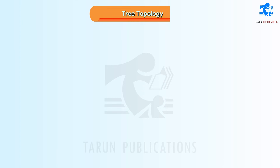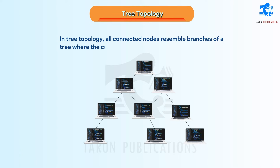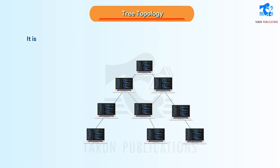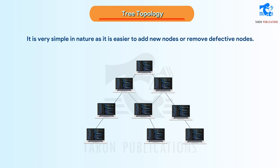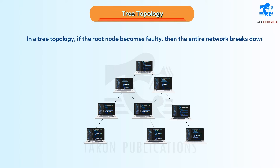In Tree Topology, all connected nodes resemble branches of a tree where the central node acts as the root node. It is simple in nature as it is easier to add new nodes or remove defective nodes. However, if the root node becomes faulty, then the entire network breaks down.